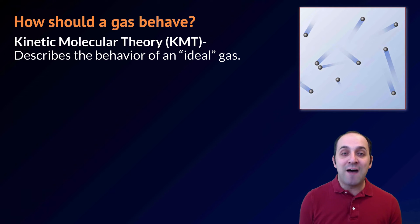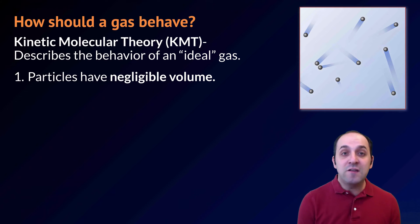Kinetic molecular theory proposes five major conditions that describe an ideal gas. The first is that the particles have a negligible volume. What that means is that the volume of the individual atoms or molecules that make up the substance of the gas is so tiny compared to the overall volume of the gas that we might as well treat it like it's nothing at all.